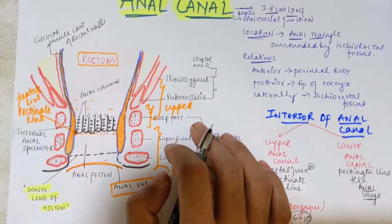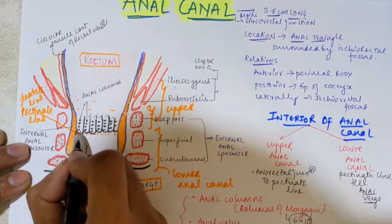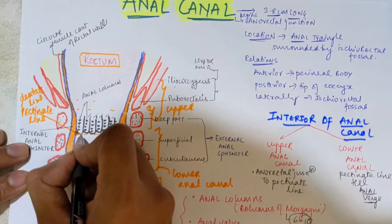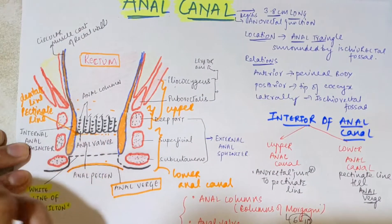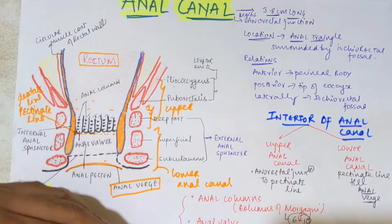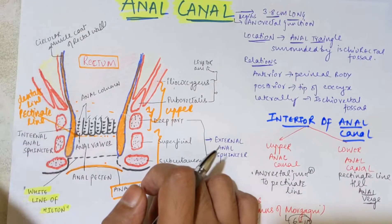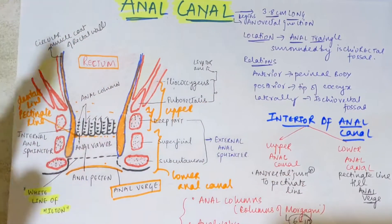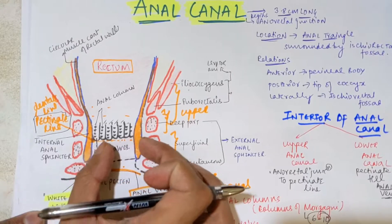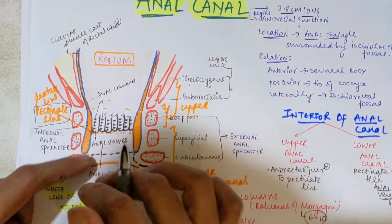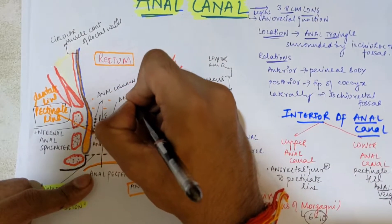The anal columns are crescentic folds made up of mucous membrane. The second structure is anal valves, also called valves of Morgagni — these form the wavy pectinate line visible in the diagram. The third structure is anal sinuses, which are the gaps or spaces between the anal columns. In anatomy, all such gaps are considered sinuses.